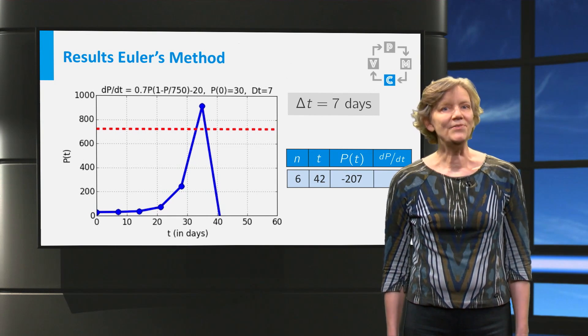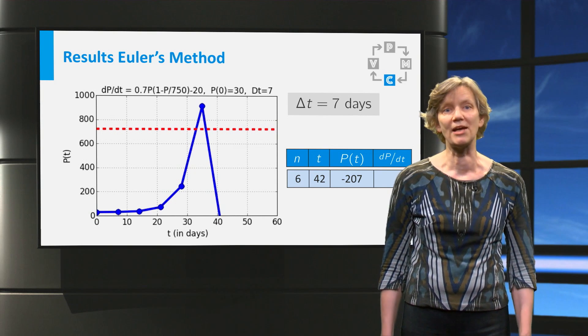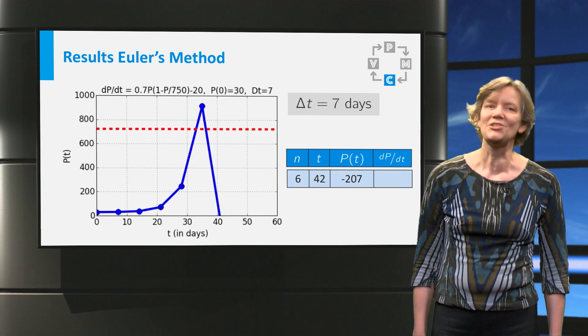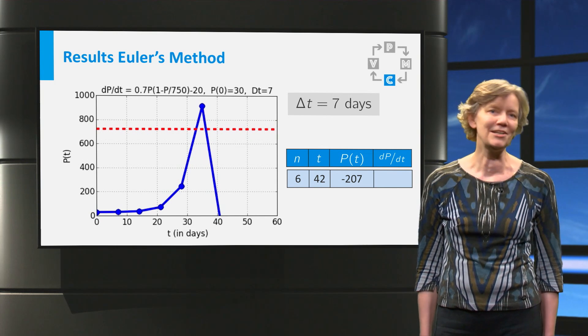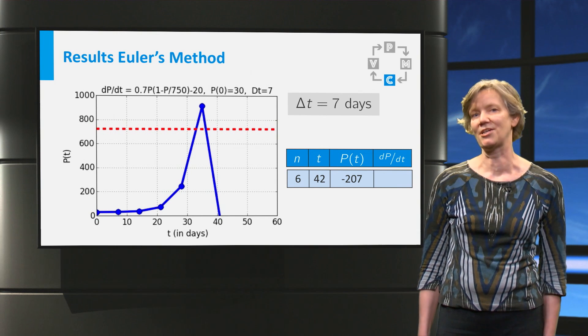However, the next step shoots again through the equilibrium value. And the whole population size becomes negative. So this is nonsense of course. So with this step size of 7 days, the numerical solution is clearly not valid after the fourth step. We will have to try a smaller step size.